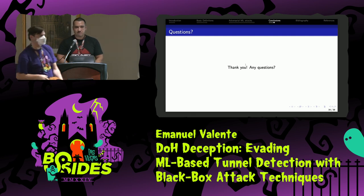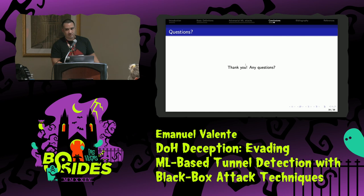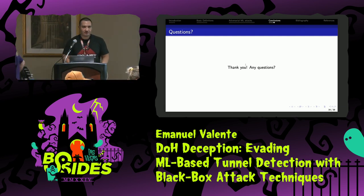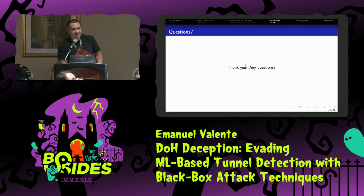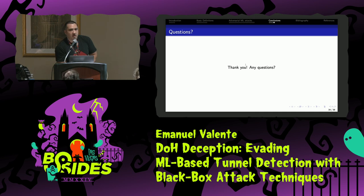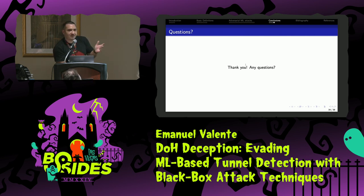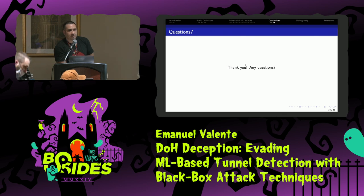Are there Snort or Suricata modules that detect these types of DOH tunneling? Suricata rules were available in the 90s for tunnel detection, but they are rule-based, so they are limited. When you create ML models, you have more flexibility and the rate of success is higher. But if you don't have anything, of course, go use Suricata — that's okay.